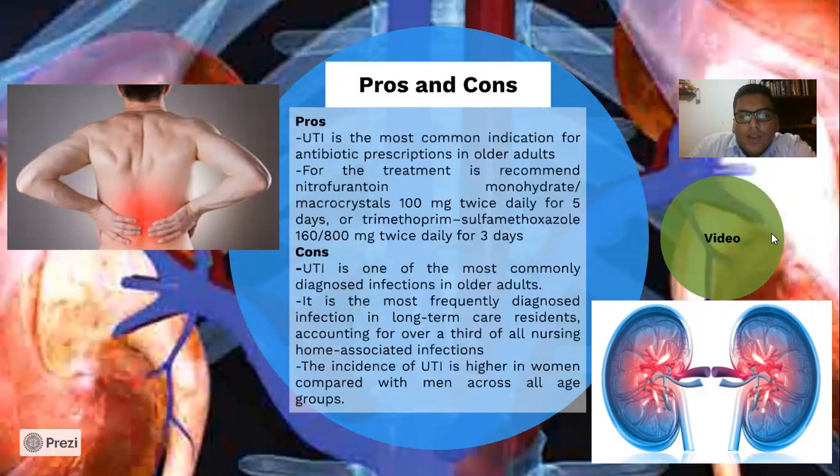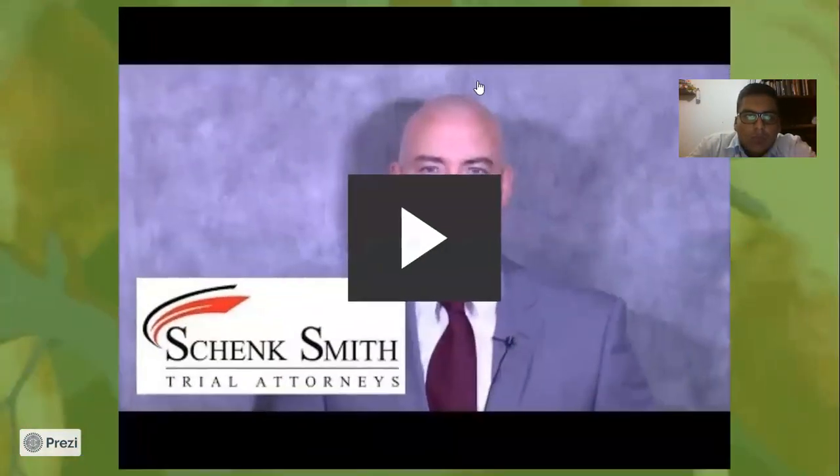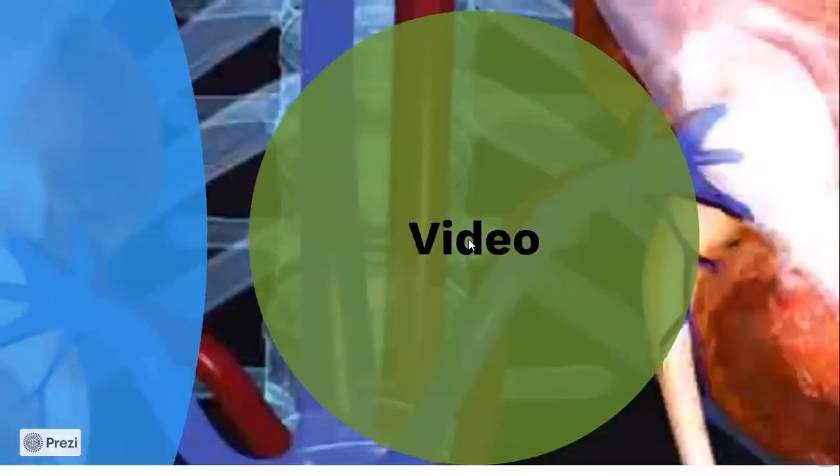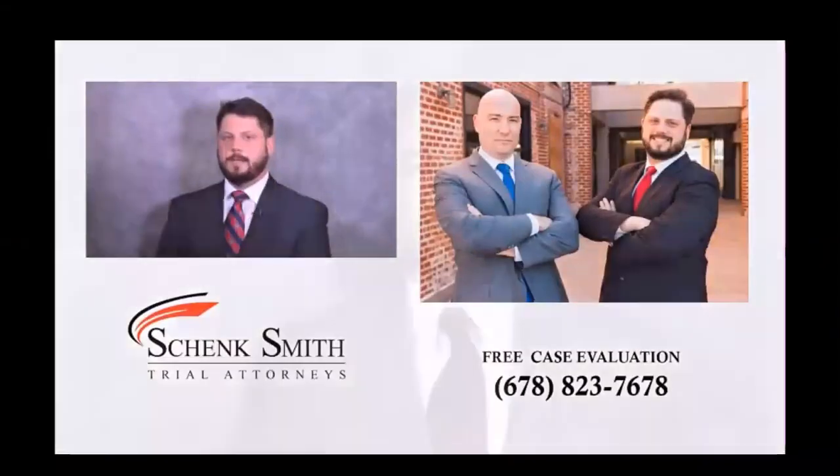The incidence of UTI is higher in women compared with men across all age groups. A UTI is caused when bacteria infects the bladder or kidneys, which happens when bacteria finds its way into the urinary tract through the urethra. The bacteria then multiply in the urine and an infection develops. In seniors, a UTI can produce severe symptoms including hallucinations, falling, fever, night sweats or chills, and pain or burning in the infected area. When a UTI is left untreated in an elderly person, it can lead to serious consequences such as dehydration and further infection.